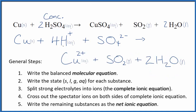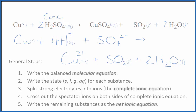If you look at charge: we have 4 plus and 2 minus on the left, giving an overall charge of 2 plus. On the products side we also have 2 plus — balanced. The atoms are balanced too. This is Dr. B with the balanced net ionic equation for Cu plus H₂SO₄. Thanks for watching.